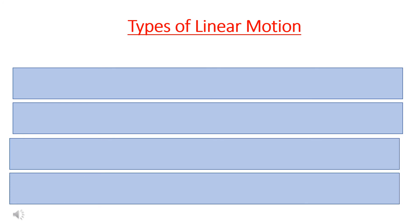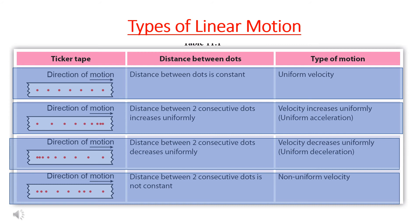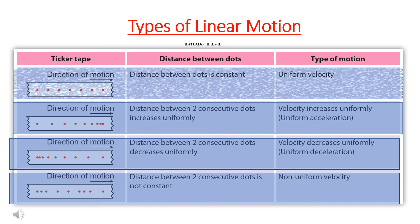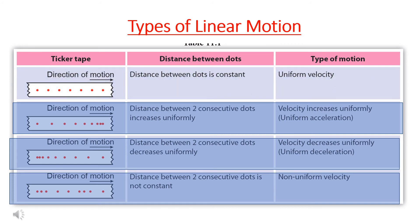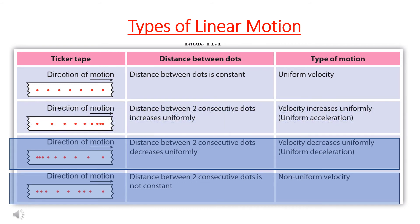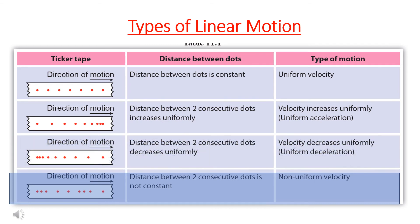The type of linear motion can be determined from the distance between dots on the ticker tape. If the distance between the dots is constant, the velocity is said to be uniform. If the distance between two consecutive dots increases uniformly, the velocity increases uniformly — there is acceleration. On the other hand, if the distance between two consecutive dots decreases uniformly, the velocity decreases uniformly — there is deceleration.